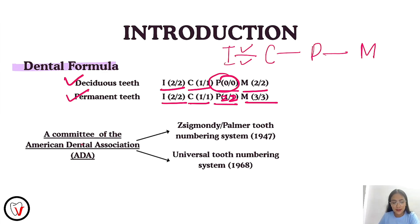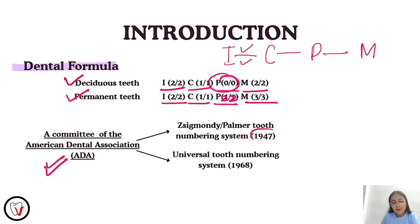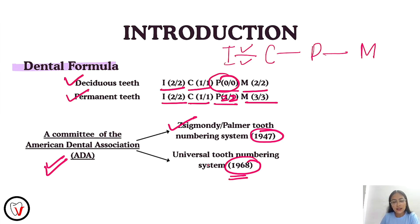Coming to the tooth numbering system — why do we actually need it? It is for recording data in shorthand notations. There is a committee of the American Dental Association. In 1947, it recommended the Zygmunti or the Palmer tooth numbering system as the numbering system of choice, which was then replaced in 1968 by the universal tooth numbering system.